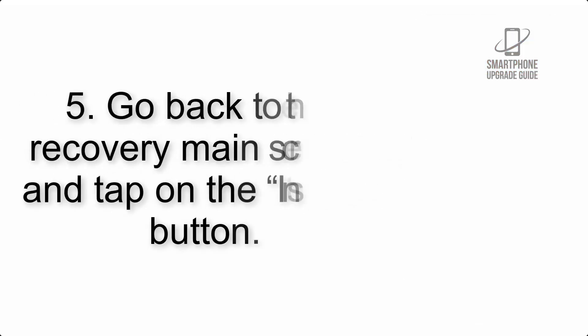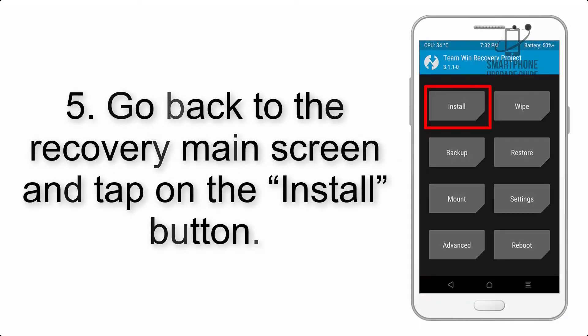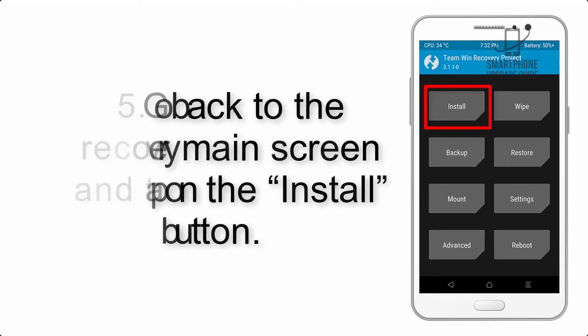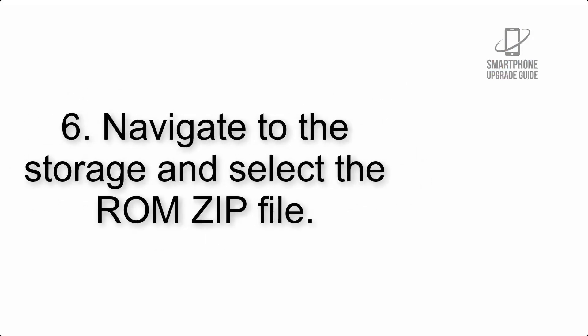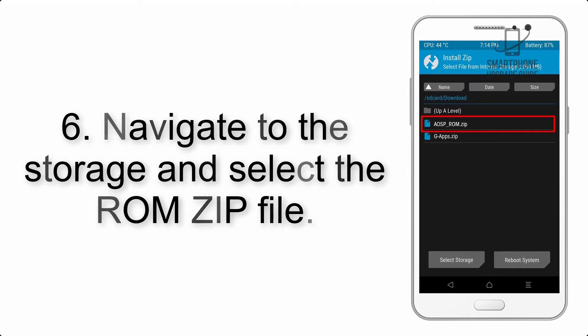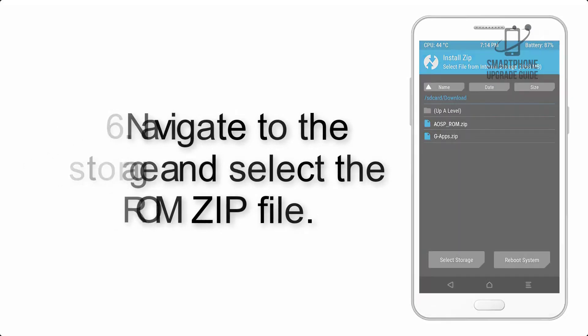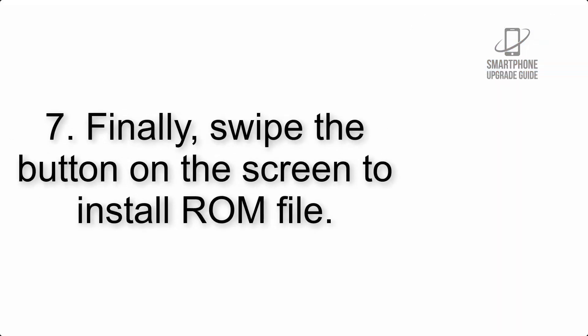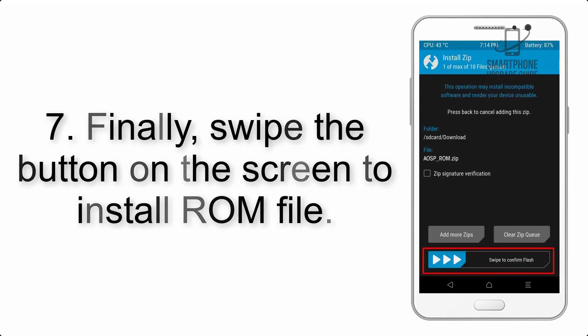Step 4: Swipe the button to wipe the device. Step 5: Go back to the recovery main screen and tap on the Install button. Step 6: Navigate to the storage and select the ROM zip file.